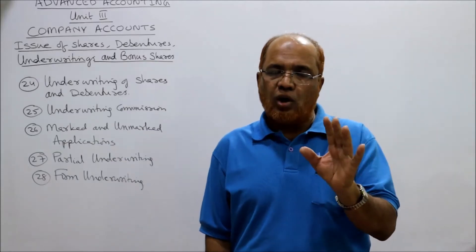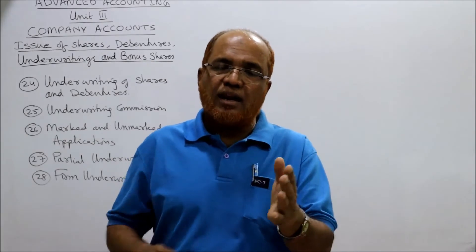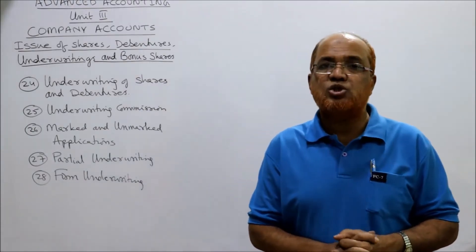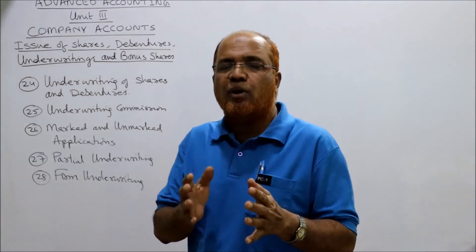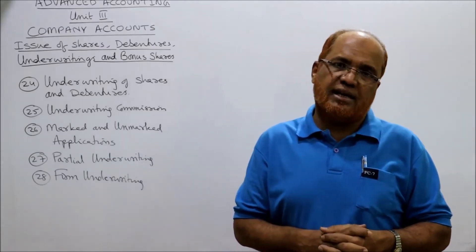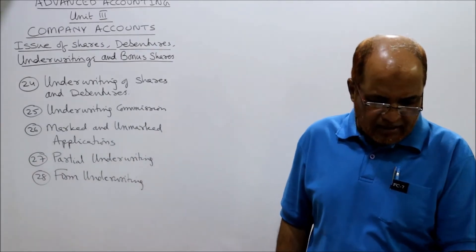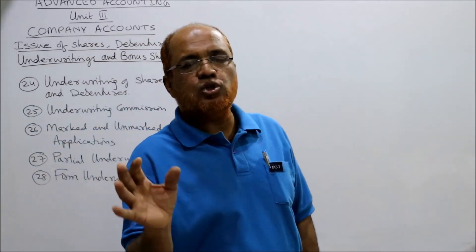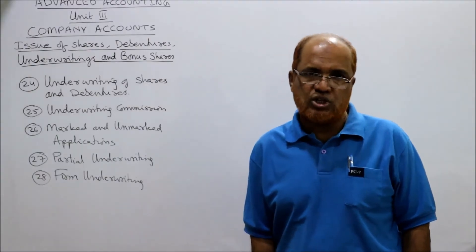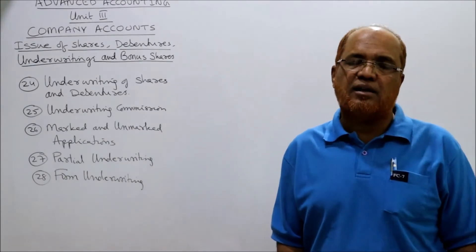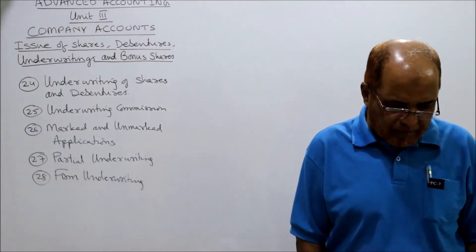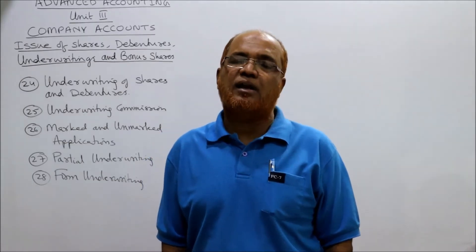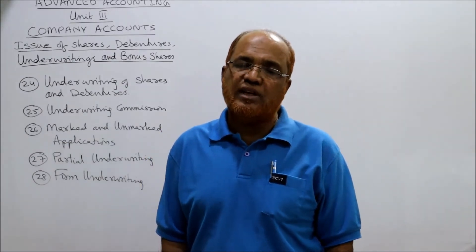If the Companies Act fixes 5% but the articles of association specify 3%, then 3% — whichever is less — will be paid in case of shares. In case of debentures, it is 2.5% of the issue price or the rate specified in the articles of association, whichever is less. However, as per SEBI rules, underwriting commission is allowed only at the rate of 2.5% of the issue price of equity shares. Third provision: the commission paid or agreed should be disclosed in the prospectus or, if there is no prospectus, in the statement in lieu of prospectus.